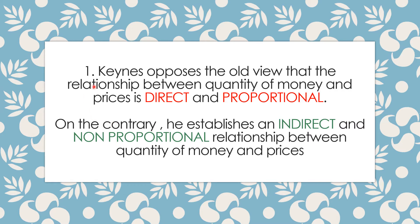The first point is that Keynes opposes the old view that the relationship between the quantity of money and prices is direct and proportional. The traditional approach holds that quantity of money and prices are directly and proportionally related — as one rises, the other rises in the same proportion. On the contrary, Keynes establishes an indirect and non-proportional relationship between money and prices. This is the first point on which Keynes' theory is considered superior to the traditional approach.